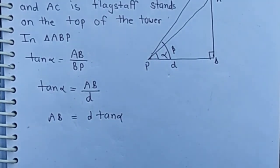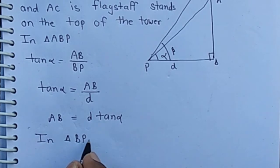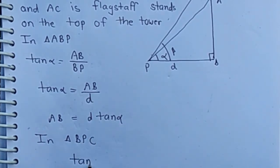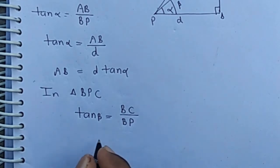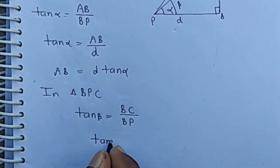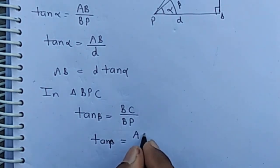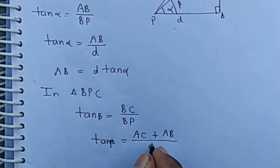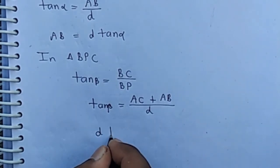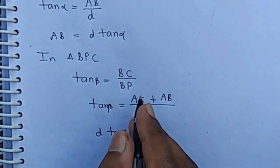Now in triangle BPC, we have tan(beta) equals BC upon BP. Here BC is the sum of AC and AB, where AC is the flagstaff and AB is the tower. Since BP equals D, we get D·tan(beta) equals AC plus AB, which is AC plus D·tan(alpha).